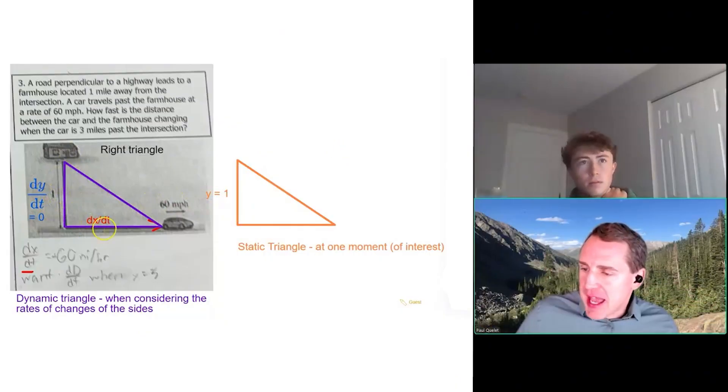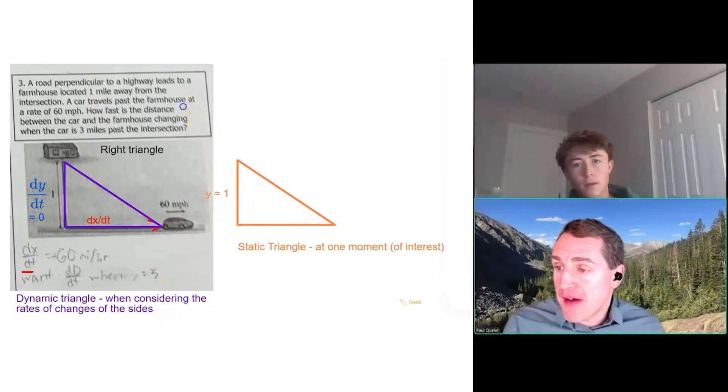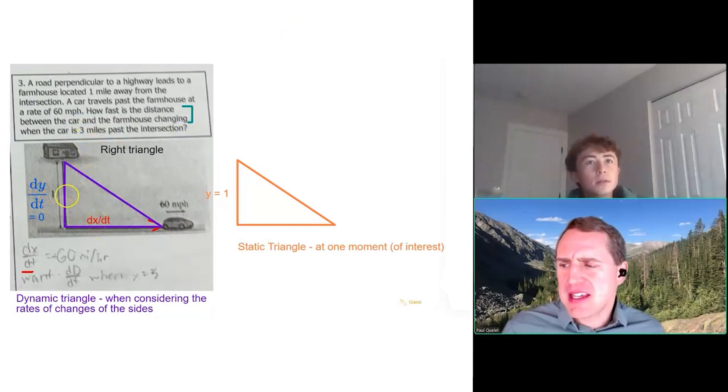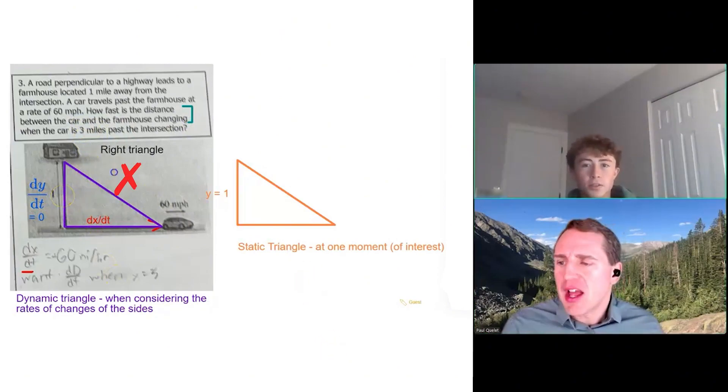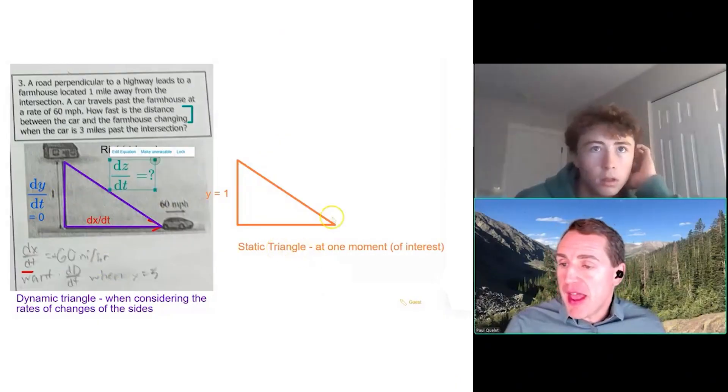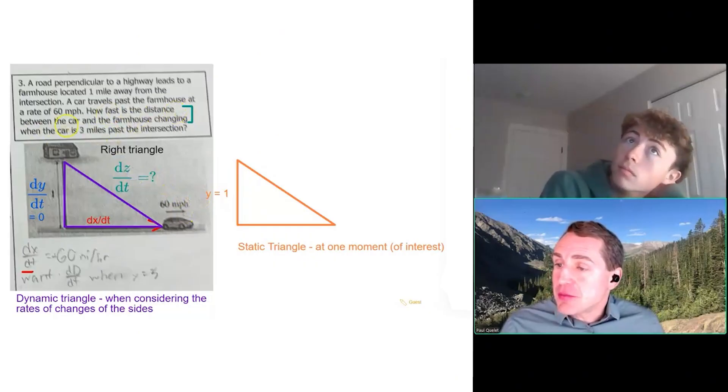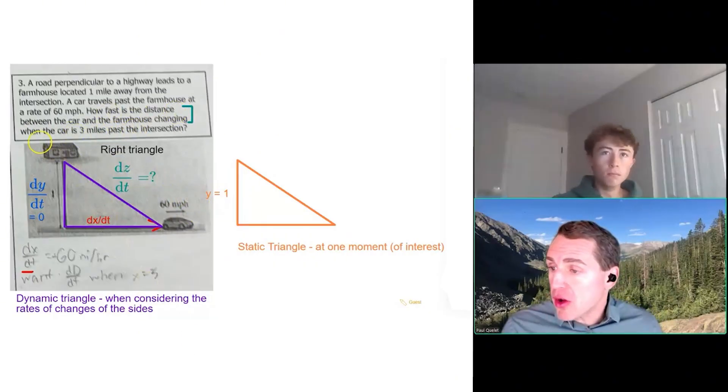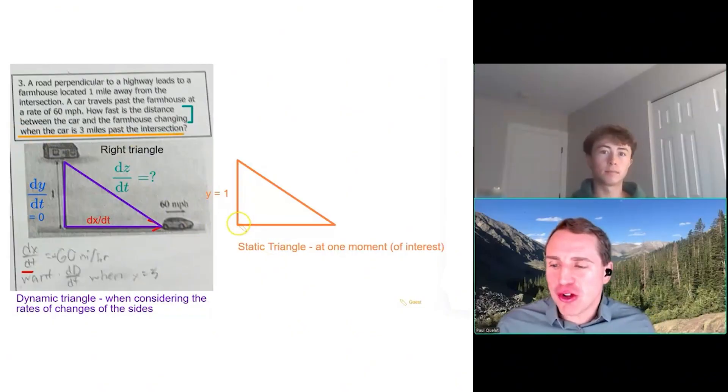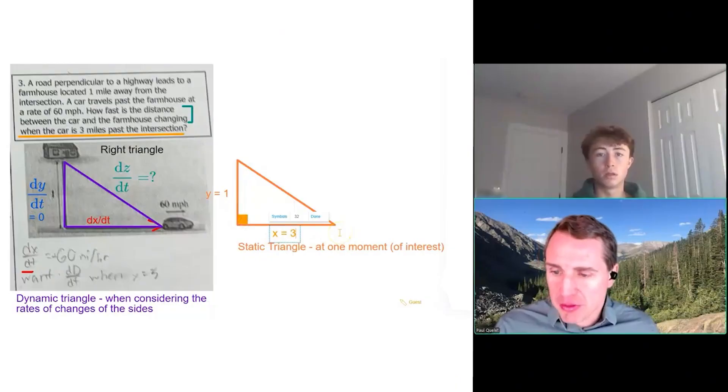Now that we have dx/dt and dy/dt, here's another question. How fast is the distance between the car and the farmhouse changing? So is that going to be dx/dt, dy/dt, or what? It's going to be the hypotenuse, right? Right. So let's call that dz/dt. And then let's take it even a step further. It says, how fast is the distance between the car and the farmhouse changing when the car is three miles past the intersection? Yeah, how far it's gone along the x-axis. So x is equal to three here.